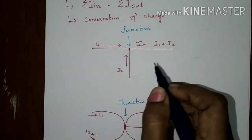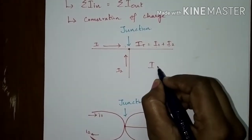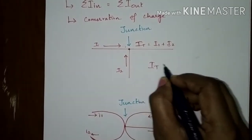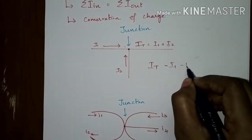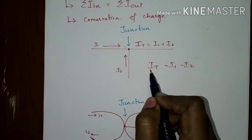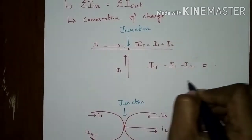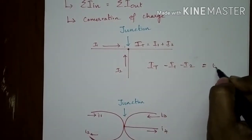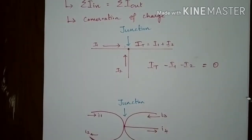If we sum up: the leaving current is I_total and the entering currents are I1 and I2, representing leaving current as positive and entering currents as negative. Summing those will give a value of zero. That is, the algebraic sum of currents entering and leaving is equal to zero.